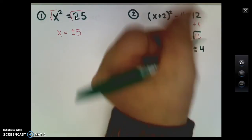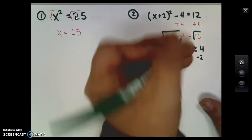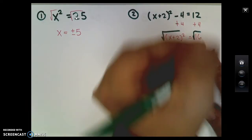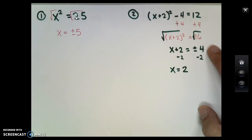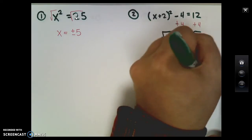That gives me x plus 2 equals plus or minus 4, since the square root of 16 is 4. At this point, we solve by subtracting 2. Keep in mind that plus minus 4 means two answers, positive 4 and negative 4. So x equals positive 4 minus 2, which is 2, and then negative 4 minus 2, which is negative 6.